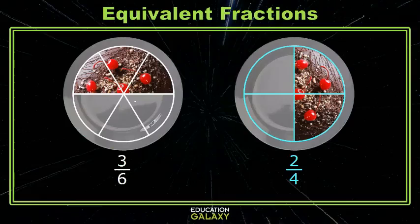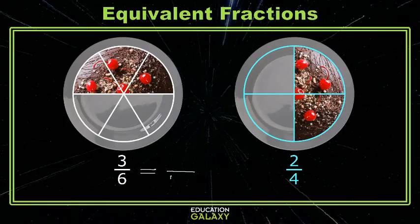Here I have three-sixths of a cake and two-fourths of a cake. And they both look like half the cake, but let's prove this to ourselves. Is there a common multiple of six and four? How about twelve? If I had a twelve on the bottom of both of these, it would be much easier to look at.